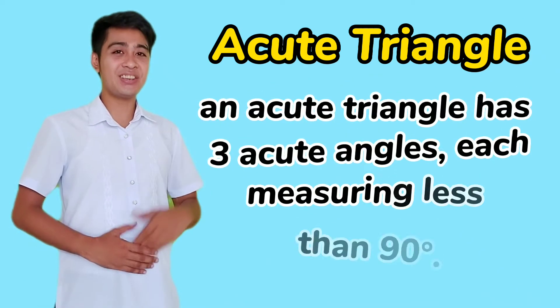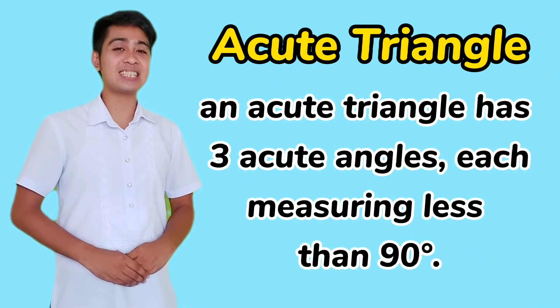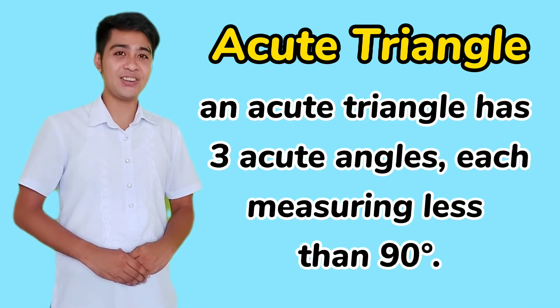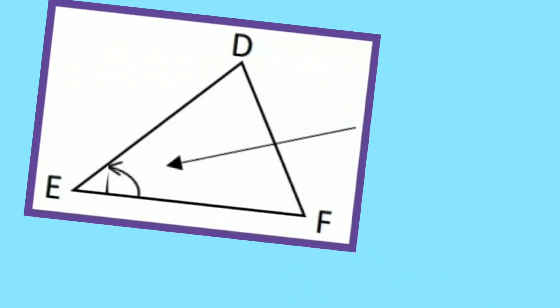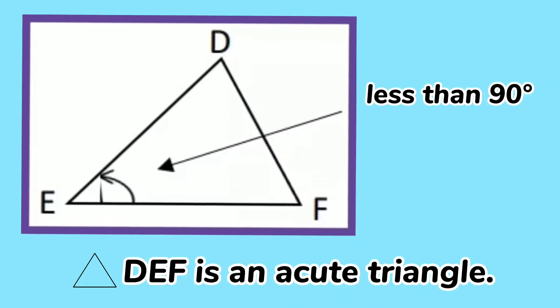The second one is the acute triangle. An acute triangle has three acute angles, each measuring less than 90 degrees. For example, triangle DEF is an acute triangle.